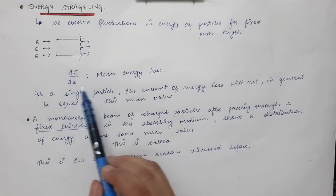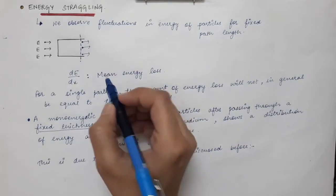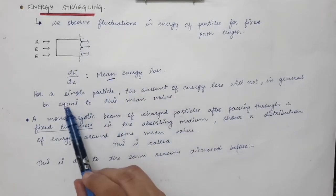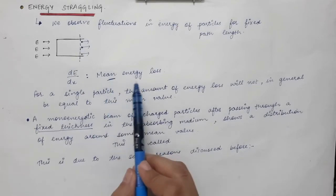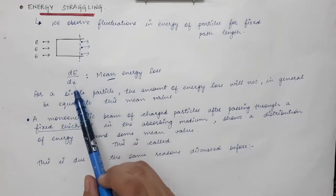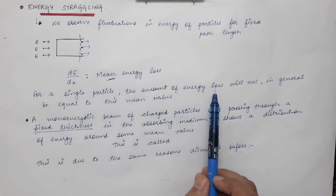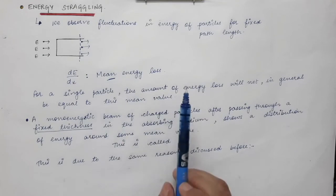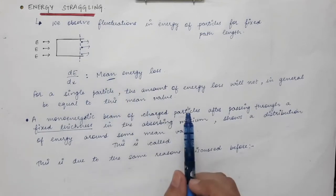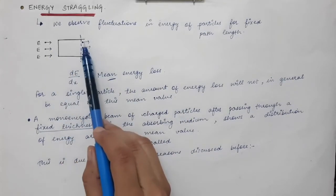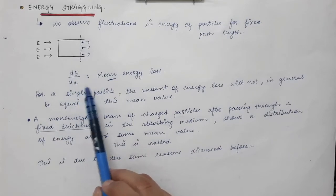The dE/dx calculated in the Bethe-Bloch formula represents the mean energy loss. But for a single particle, the amount of energy loss will not be exactly equal to this mean value. It will be around the mean value but not exactly equal. So all particles lose their energy, but not exactly equal to dE/dx, because that is only the mean energy loss.